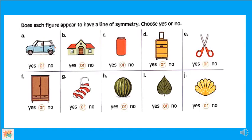أول واحدة: car. شايفين الكار؟ يا ترى الكار اللي قدامنا دي نقدر نعمل لها line of symmetry ولا ما نقدارش؟ لا طبعاً ما نقدارش. لأنا لو جيت رسمت line هنا، هل الـ part اللي قدام ده هيكون شكله زي الـ part اللي وراه؟ لا، مختلفين عن بعض. يبقى ده ما بقاش line of symmetry.